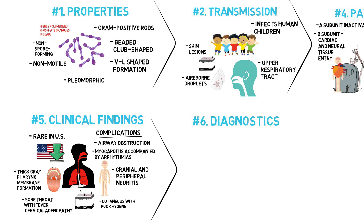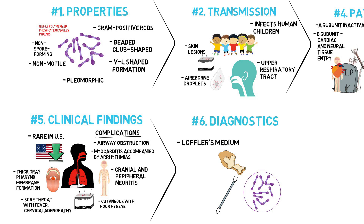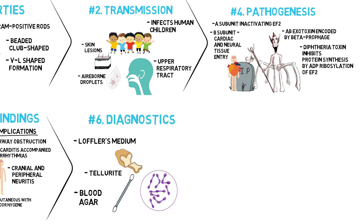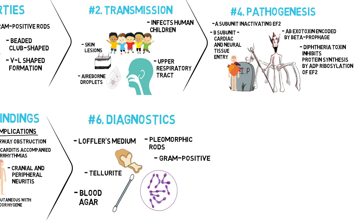Laboratory diagnosis involves both isolating the organism and demonstrating toxin production. A throat swab should be cultured on Leffler's medium, a tellurite plate, and blood agar plate. Smears of the throat swab can be stained with both Gram stain and methylene blue. Pleomorphic gram-positive rods can be suggestive, and the methylene blue stain is excellent for revealing the typical metachromatic granules.